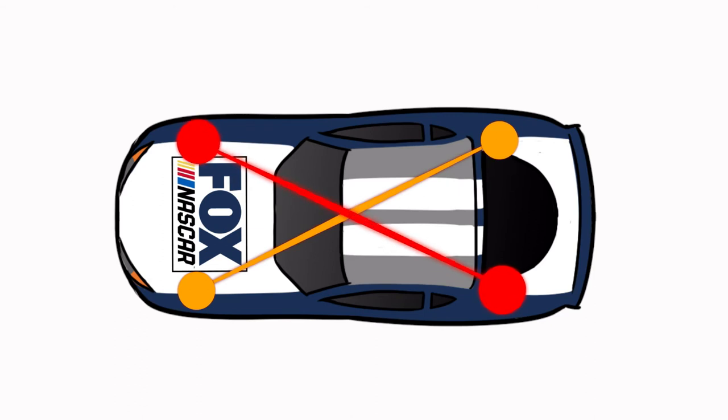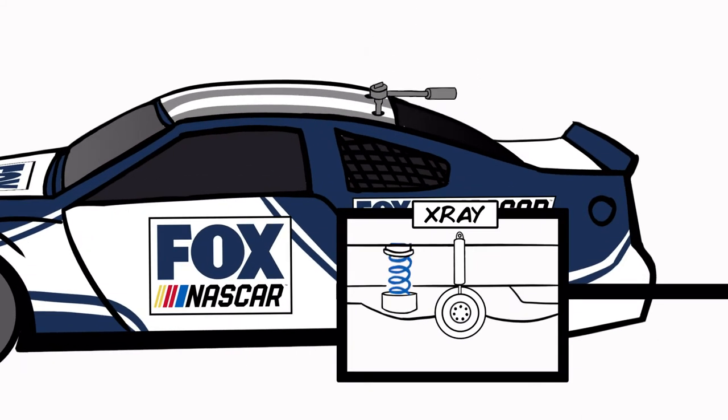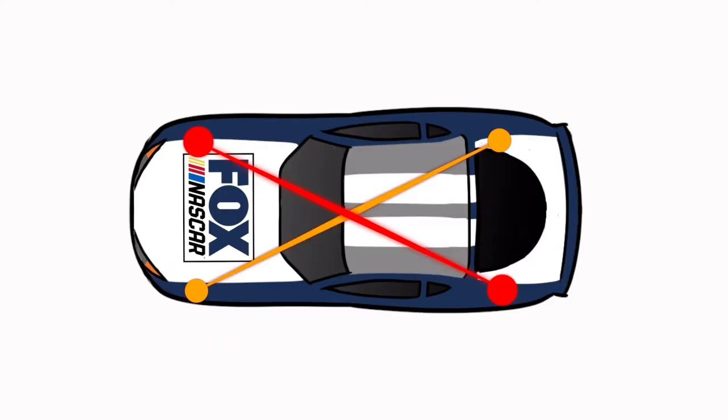Likewise, an adjustment to the right rear impacts the left front. Putting wedge in compresses the left rear spring and increases the percentage of weight that corner has to hold. So adding wedge to the left rear makes the left rear and right front heavier.